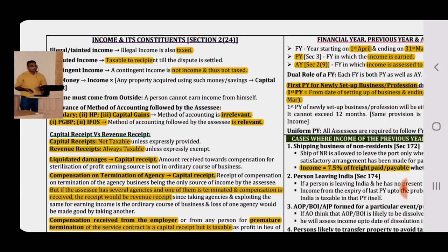Definition of Income is given under Section 2(24). Regarding illegal income — illegal income is also taxable under the Income Tax Act 1961. Regarding disputed income — disputed income is also taxable to the recipient until the dispute is settled. Regarding contingent income — a contingent income, like gambling winnings that are uncertain, is not income and therefore not taxable. Pin Money is generally treated as a capital asset and is not taxable.